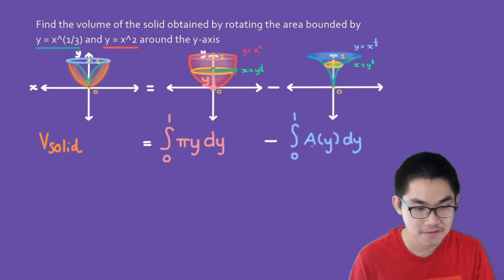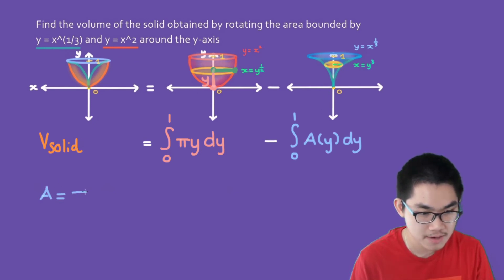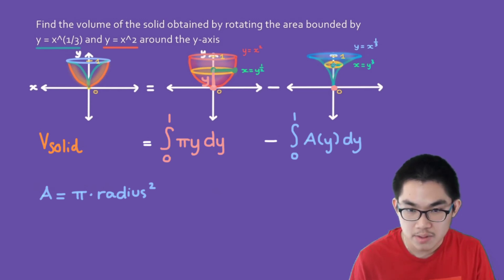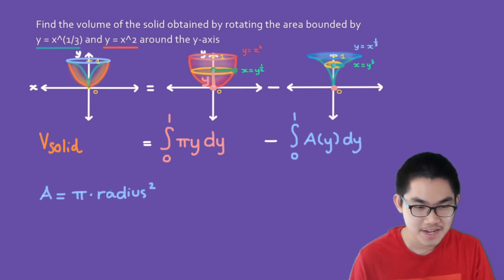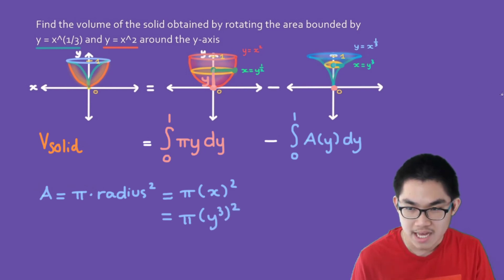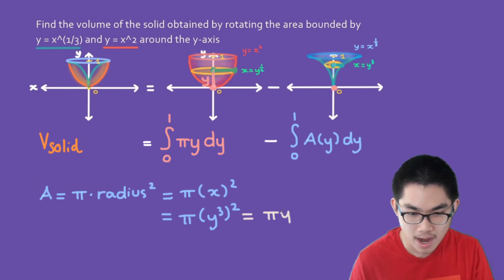The area of the inner circular cross-section is also pi times the radius squared. The distance from the center to the cross-section is y, and the distance from the y-axis to the edge of the inner function is x. Solving y equals x to the 1/3 for x gives x equals y to the power of 3. So the area is pi times x squared, which is pi times y cubed squared, equaling pi times y to the power of 6.